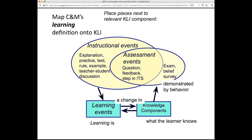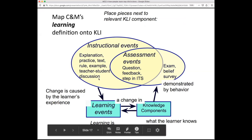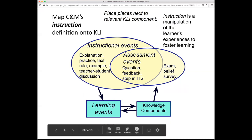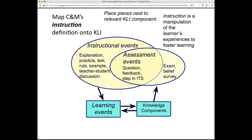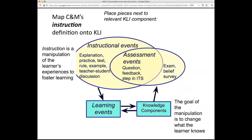We can give a belief survey. 'Change is caused by the learner's experience' — that's what's happening as students interact with a learning environment of some kind. And how about instruction? Instruction is a manipulation of the learner's experience to foster learning — that's over here. The goal of the manipulation is to change what the learner knows — that's down here. So in the definition of instruction, there's a jump from what we do to the knowledge that's created.